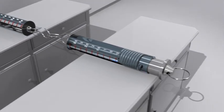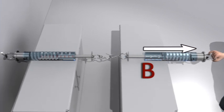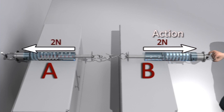This is because when we pull balance B, it exerts a force of 2 Newton on balance A. Balance A pulls balance B with an equal force of 2 Newton but in opposite direction.